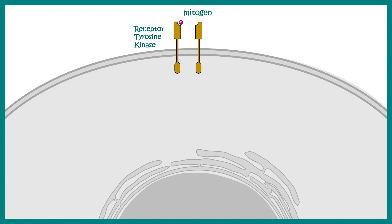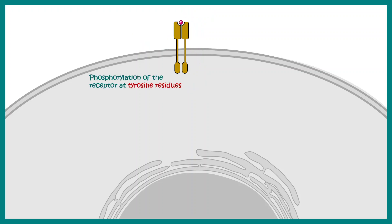Upon ligand binding, the receptor tyrosine kinase dimerizes. This dimerized receptor is now active and it phosphorylates the tyrosine residues in the cytoplasmic domain.